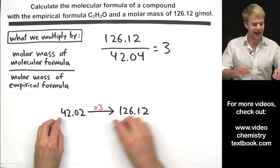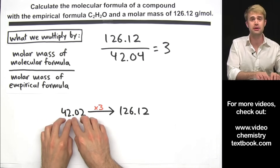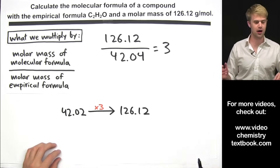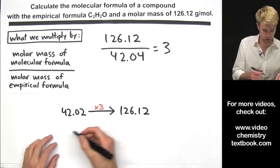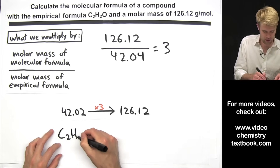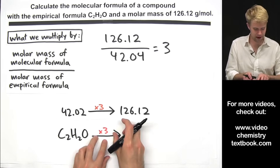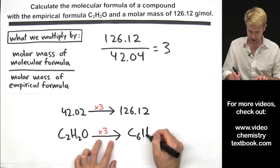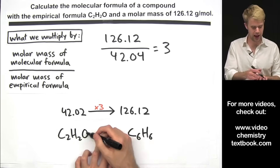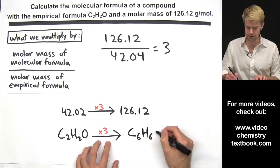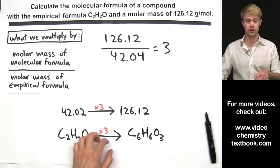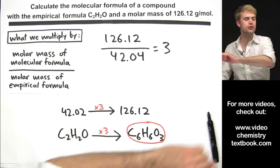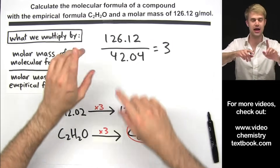We divide 126.12 by 42.04 and get 3. That is what we have to multiply the empirical formula's molar mass by to get the compound's molar mass. To get the molecular formula, we take the empirical formula C2H2O and multiply it by 3: C gives 2 times 3 = 6, H gives 2 times 3 = 6, and O gives 1 times 3 = 3. The molecular formula is C6H6O3, which has a molar mass of 126.12 and C2H2O as its empirical formula.